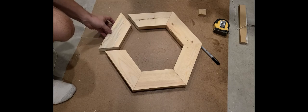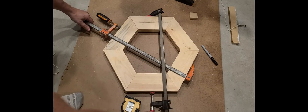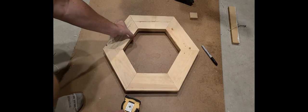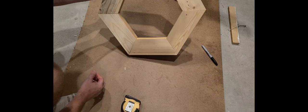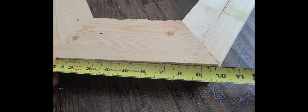So here I have my hexagon, a six-sided figure, 30 degree miters. I glued it up, let it dry. According to our table, we needed the sides to be just under 10 inches, and that's what they are.